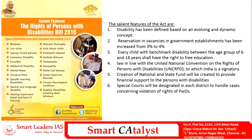The main feature of this new act is that it has expanded the number of disabilities from 7 to 21, adding mental illness and intellectual disability as two main additions. Disability has been defined for the first time based on an evolving and dynamic concept. The reservation in government jobs has been widened from 3% to 4% for disabled persons classified under this act.